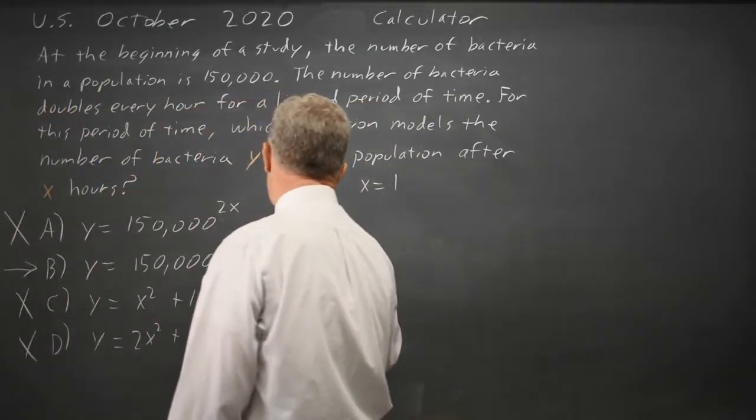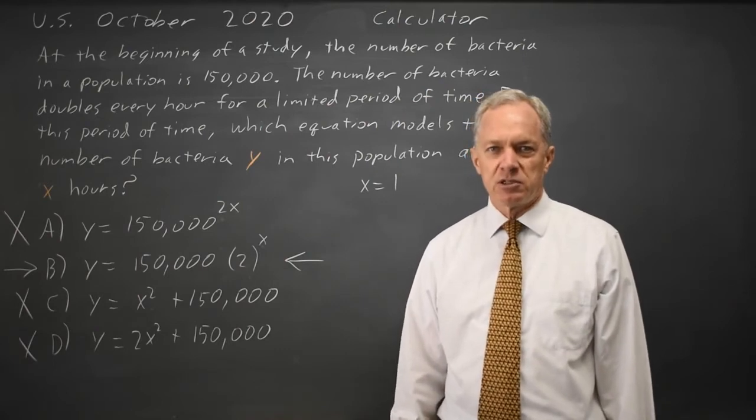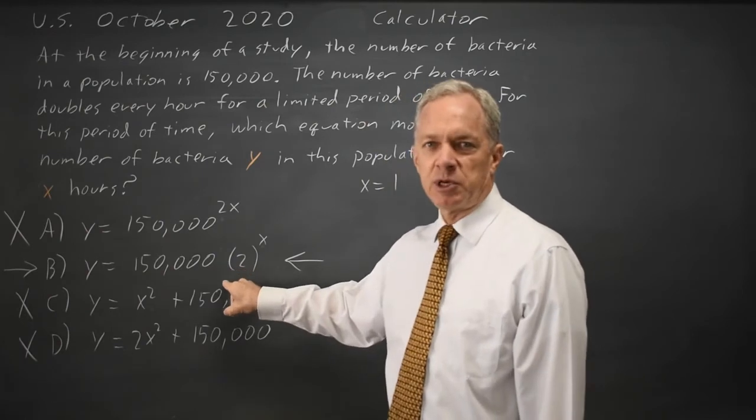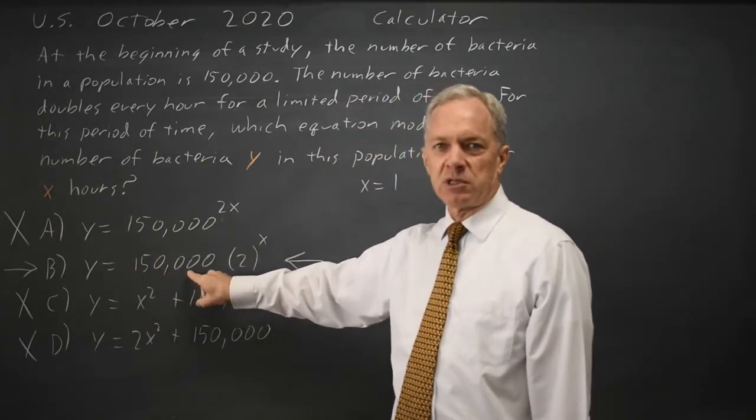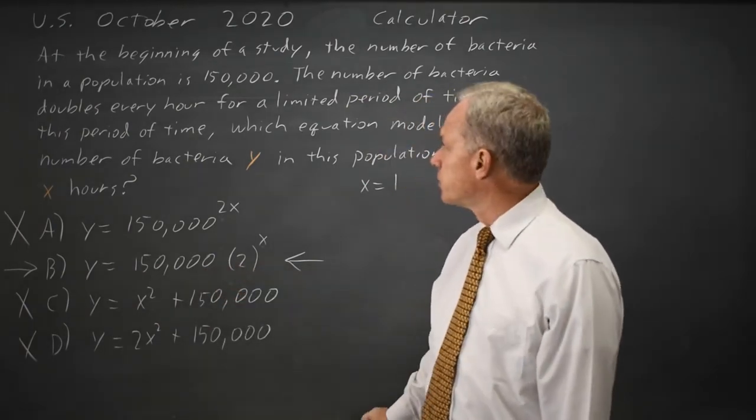The only answer that gives me the correct value at x equals 1 hour is choice B. And this is in fact our classic exponential. Our amount is the initial number times, in this case, 2 to the x. So that would be the correct answer.